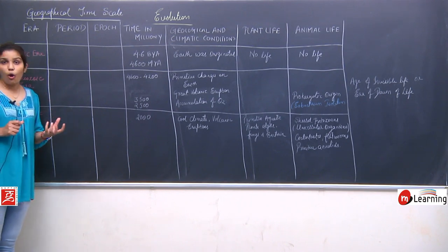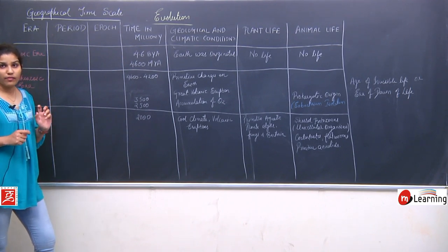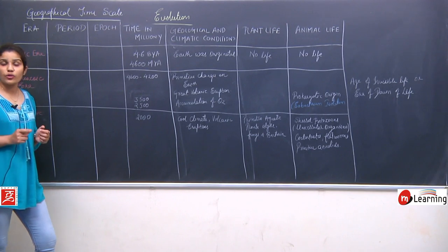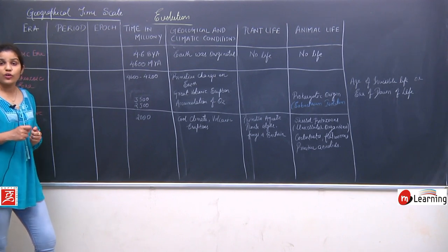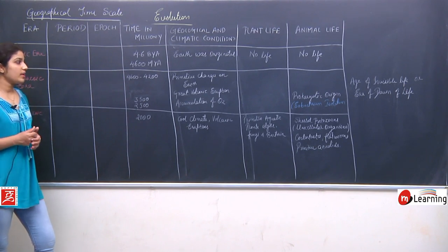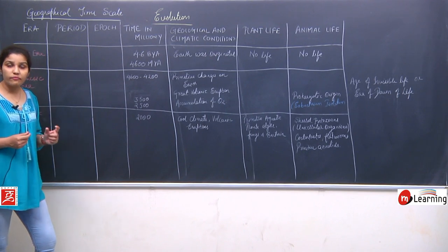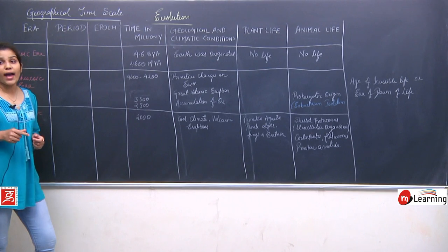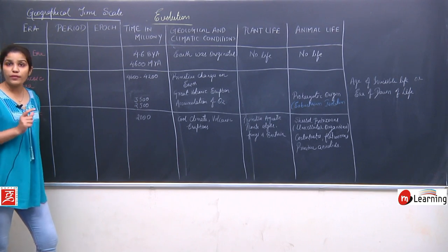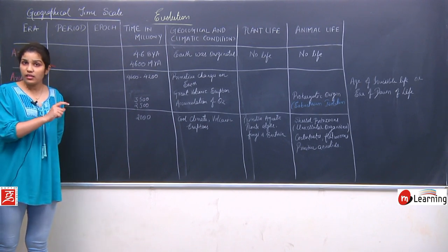The second phase of the Archaeozoic era, around 3500 million years ago, saw the first life — Eobacterium isolatum, a prokaryotic organism. In the third phase, around 2500 million years ago, cyanobacteria or blue-green algae first released oxygen into the environment, performing proper photosynthesis using chlorophyll. This led to aerobic respiration and the formation of the ozone layer, blocking harmful UV rays.